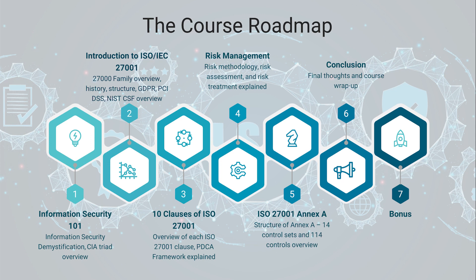The second section is where we start our journey, and I have called this section Information Security 101. From the title you can get the idea of what we are going to talk about here. In this section, we will go from the basics about information security — you will learn what it is and what it isn't — and all of that will be condensed into the three pillars of information security, the CIA. Famous CIA — it's not the agency. You will learn all about it in the next section.